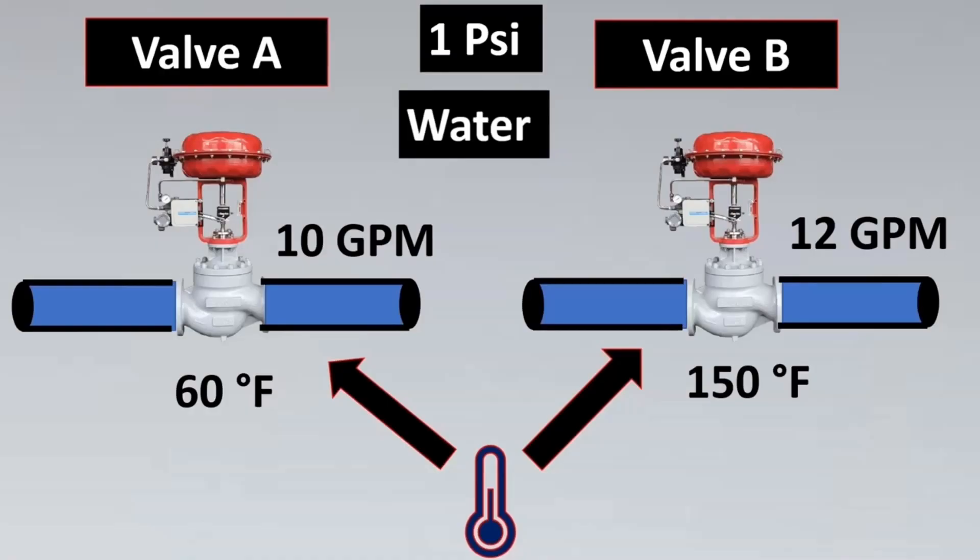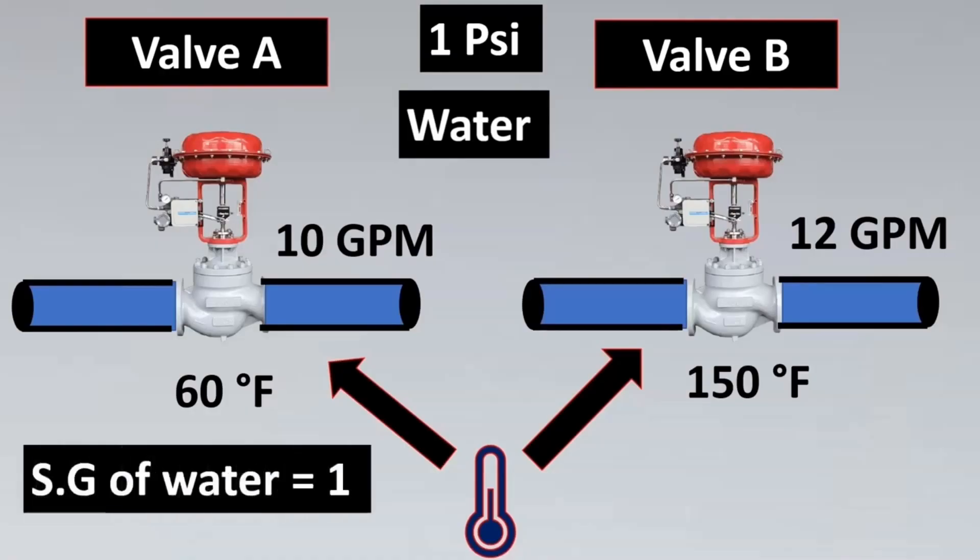A lot of people ask why 60 degrees Fahrenheit is especially taken in CV definition. The answer is because the specific gravity of water is 1 at 60 degrees Fahrenheit. This will help greatly when we are doing CV calculations.